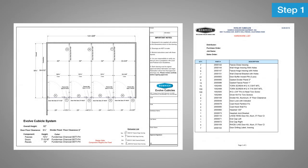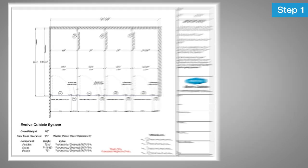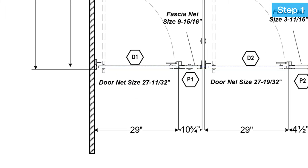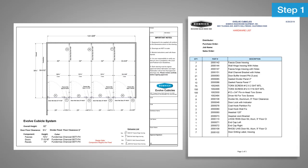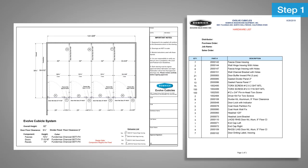Step 1: Verifying Received Order. First, open the hardware box and locate the layout drawings and hardware list. Next, verify that all components were received by matching the ID number on the component label to the ID number shown on the drawing. Then, use the hardware list as a checklist and make sure all hardware is present.